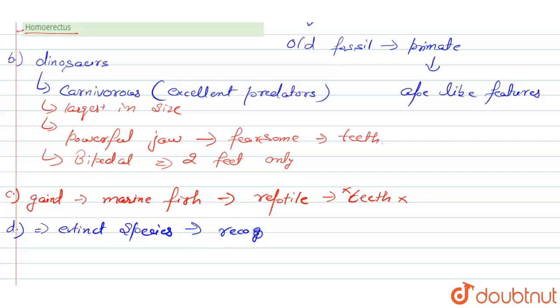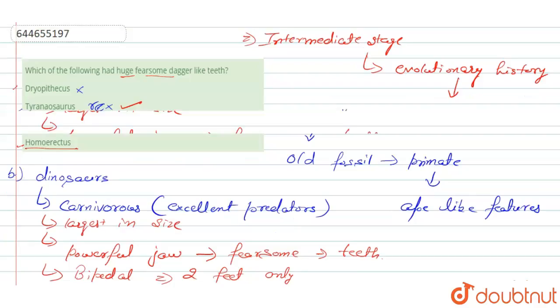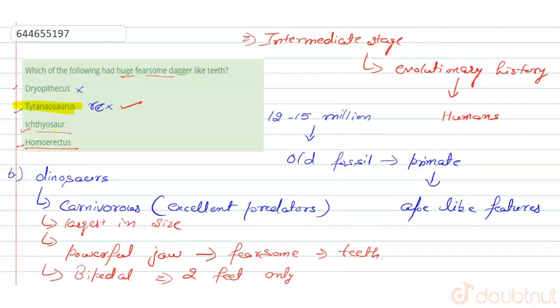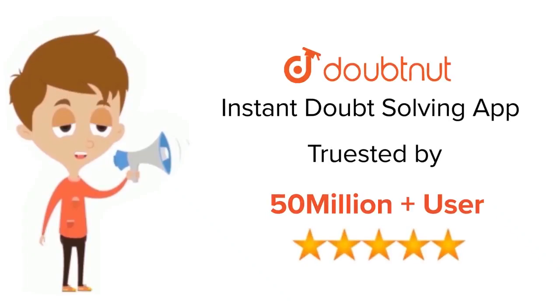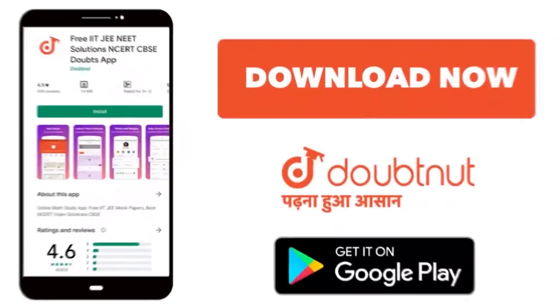So they don't have anything fearsome and huge dagger-like teeth. So the correct option for our question is option number B. Thank you. For class 6-12, IIT-JEE, and NEET level, trusted by more than 5 crore students, download Doubtnet app today.